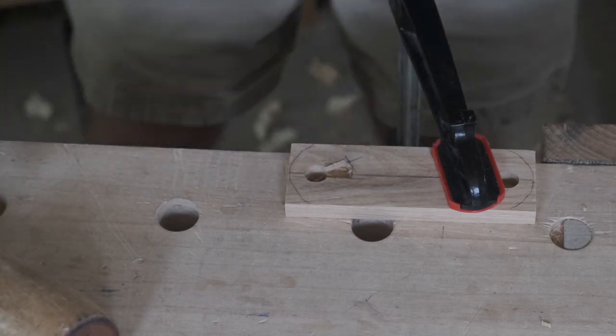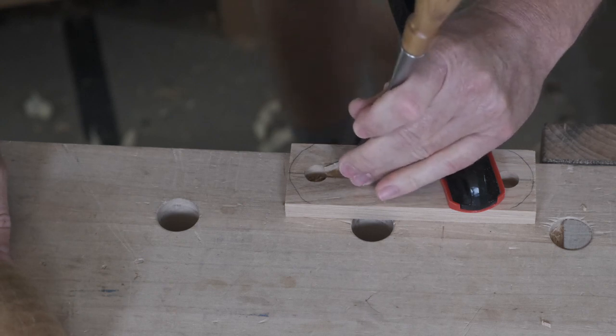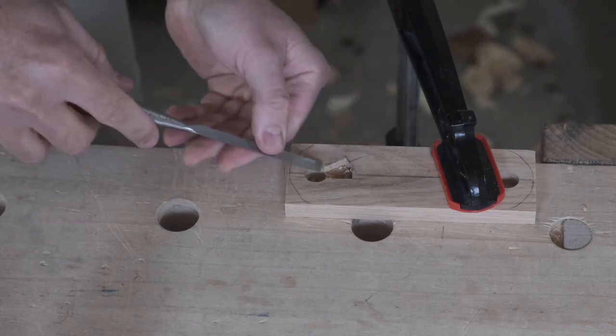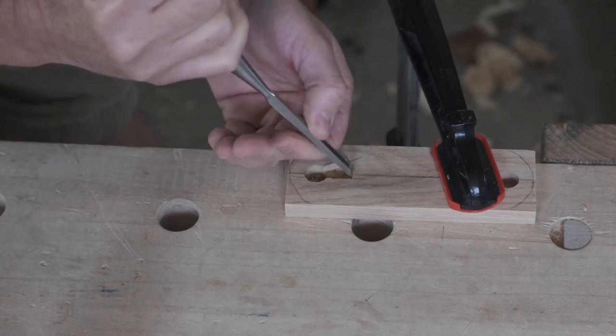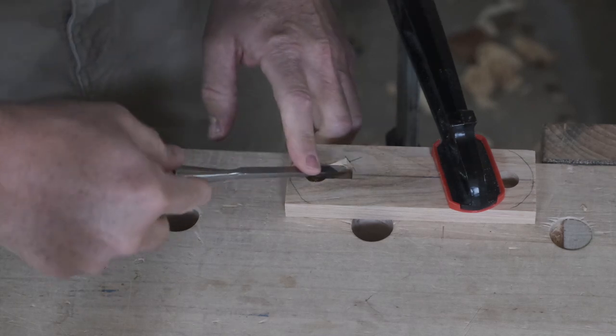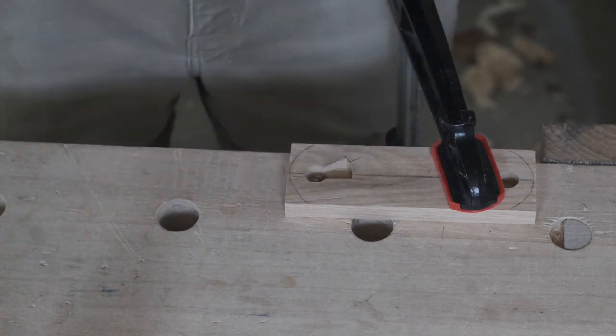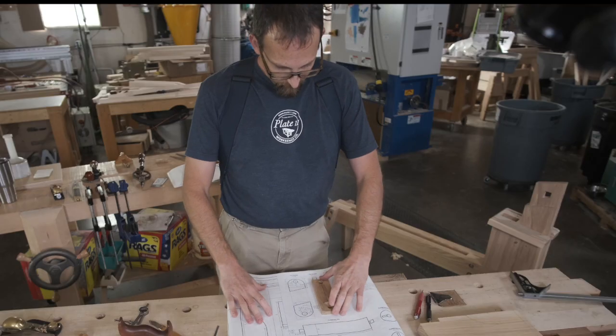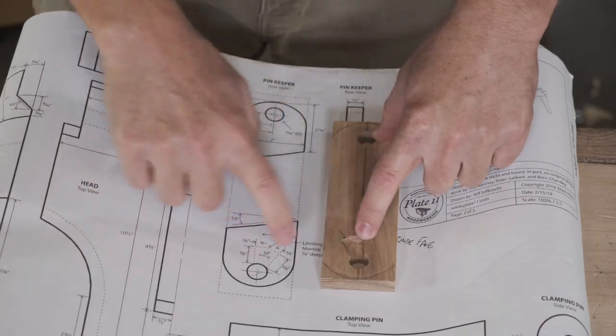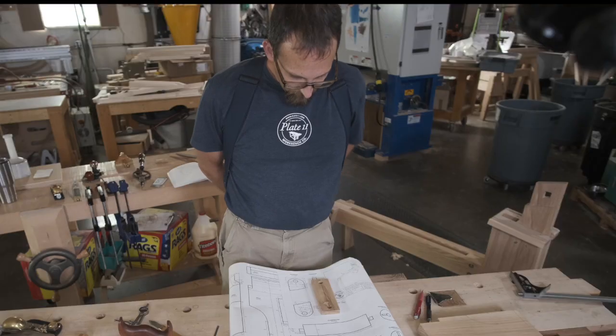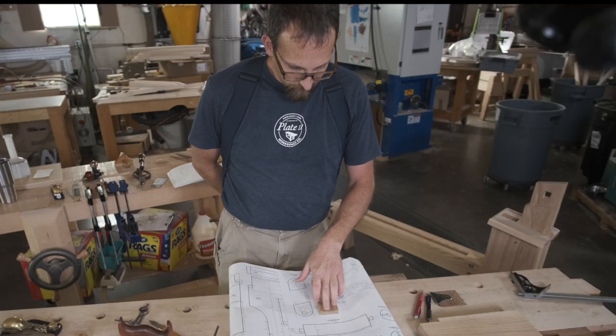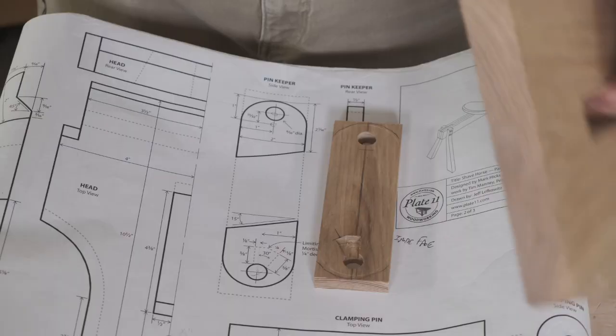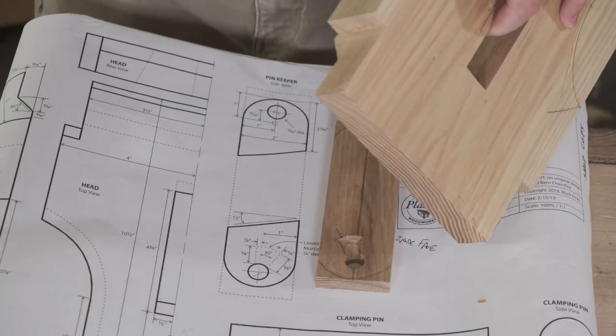Now that we've got all that waste out of the way, we can start working our way back to the layout. Just double check our depth, make sure we're deep enough all the way around. So now we've got our mirror image layout, and I can go over to the bandsaw and cut this curve, or I can go ahead and fit it to the head, which is probably what I'll do first.